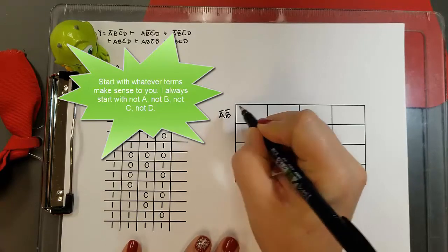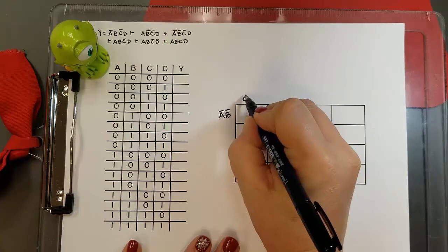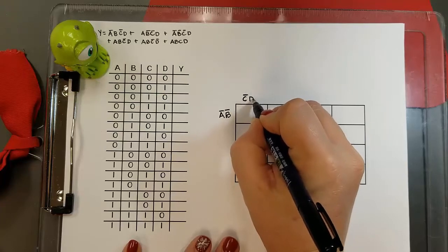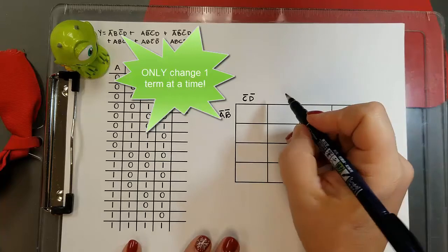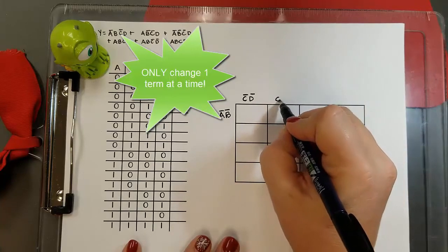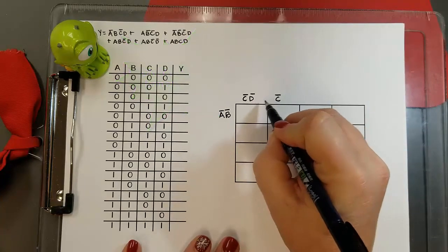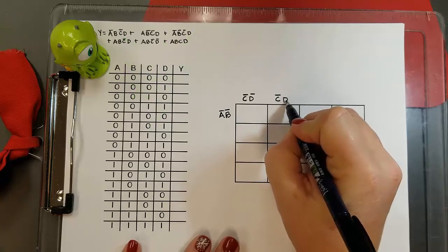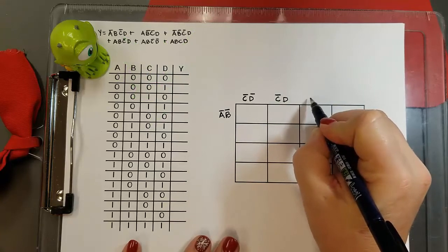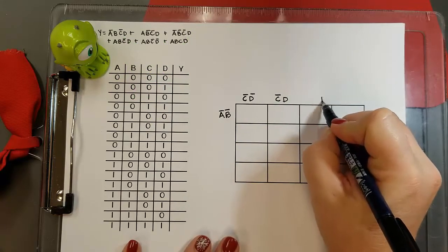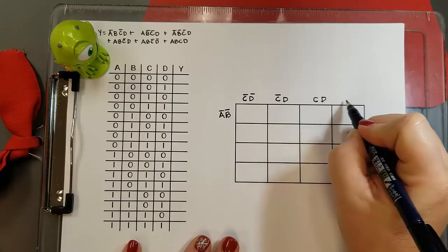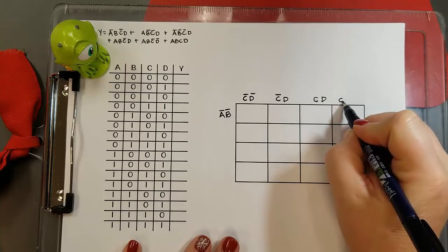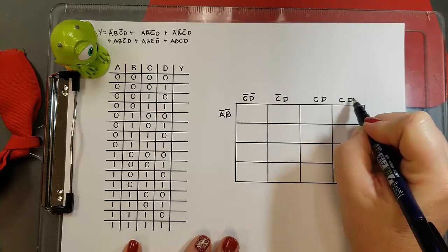As I move both across and down I can only change one term. So as I move from not C D, I'm going to leave not C the same and only change D. When I move again I can only change one term, so I need to keep D the same and I change not C to C, and that changes my last term to C not D.